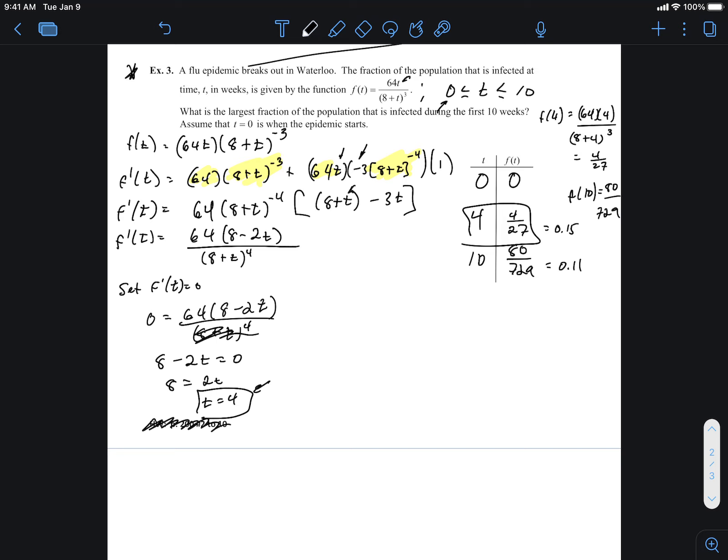And if we were to think of these in percentages, that would be 15% and 11%. So, we know, we know over this period of 10 weeks, that there is a maximum here. And we know that, therefore, the largest fraction of the population that will be infected is 4 over 27 or 15% during the first 10 weeks.